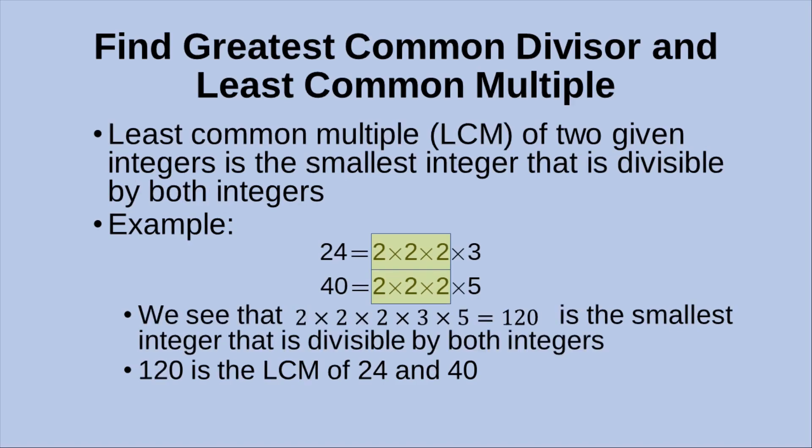On the other hand, the least common multiple of two given numbers is simply the smallest integer that is divisible by both numbers. For example, 24 is expressed as 2 × 2 × 2 × 3, while 40 can be expressed as 2 × 2 × 2 × 5. When we combine these two cases together, we can see that 2 × 2 × 2 × 3 × 5, which is equal to 120, is actually the smallest integer that is divisible by both numbers. So 120 is the LCM of both numbers.